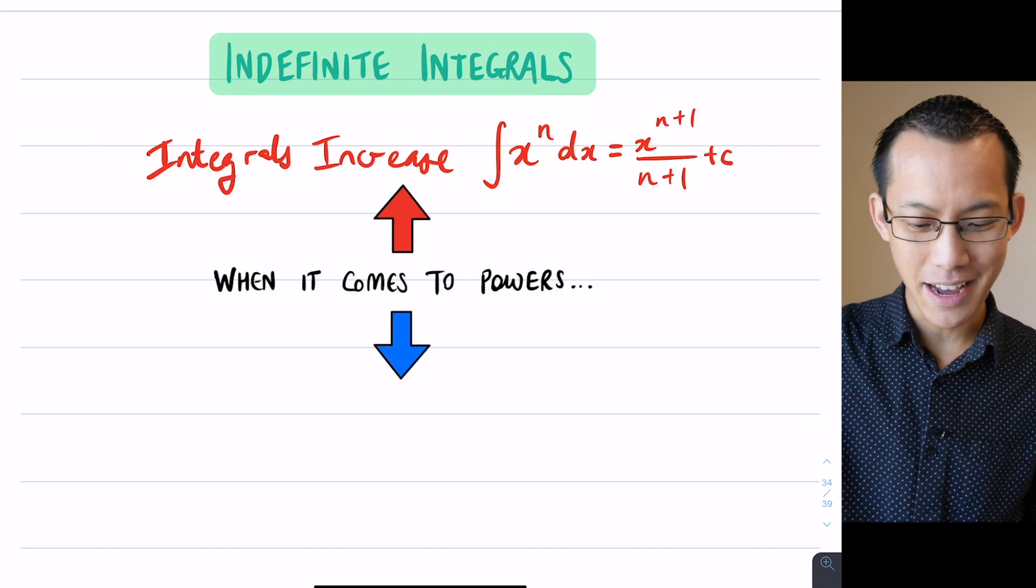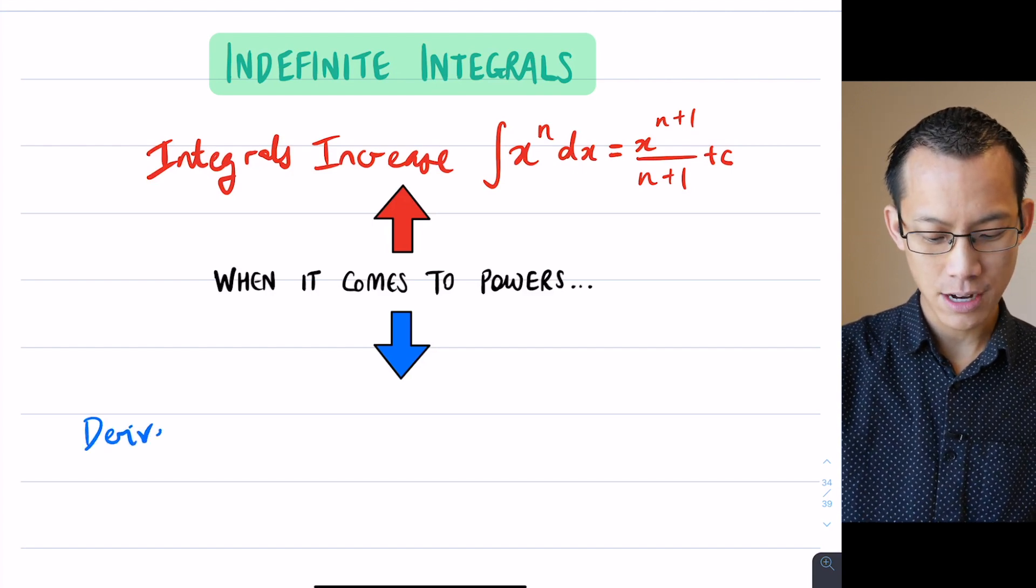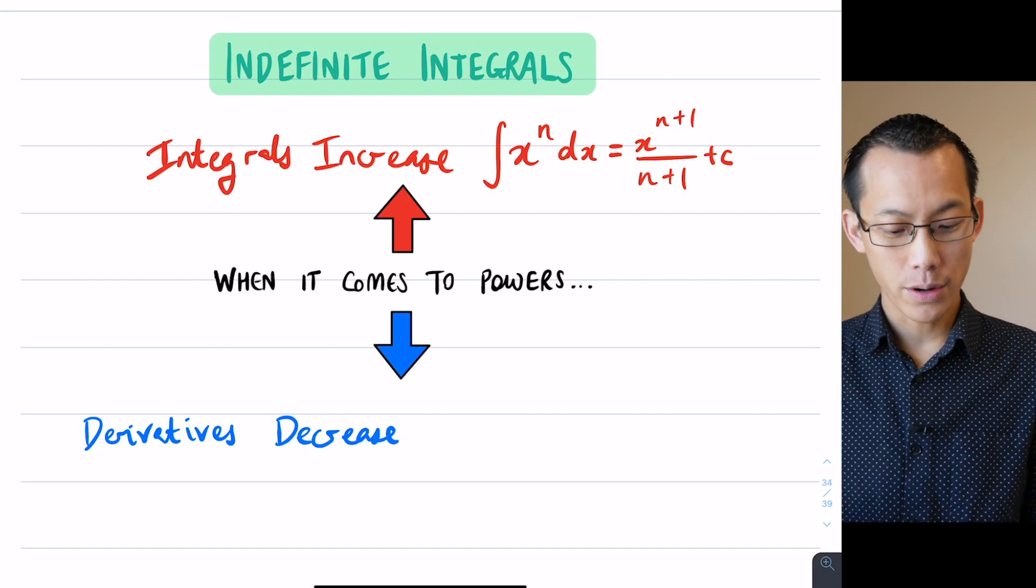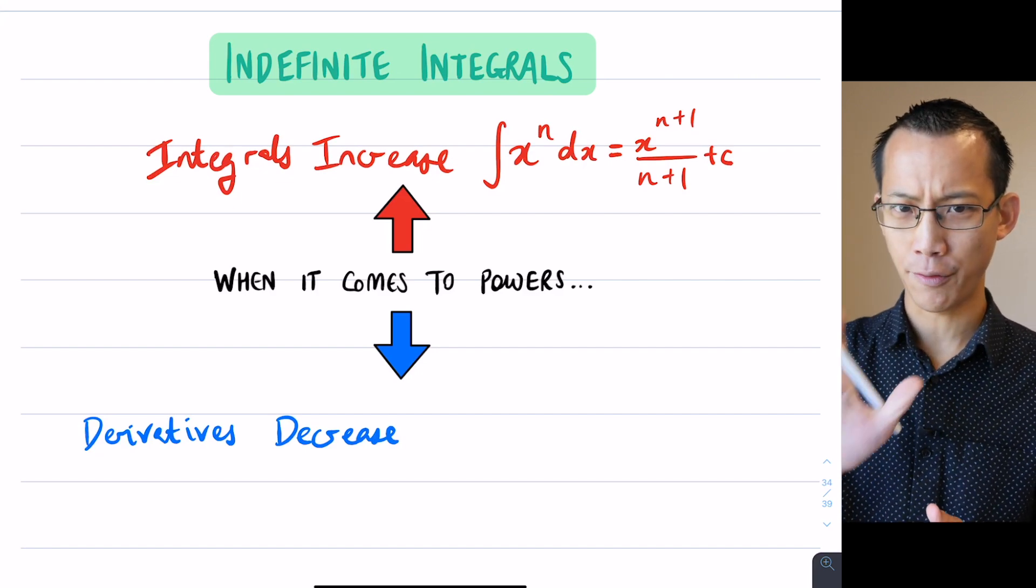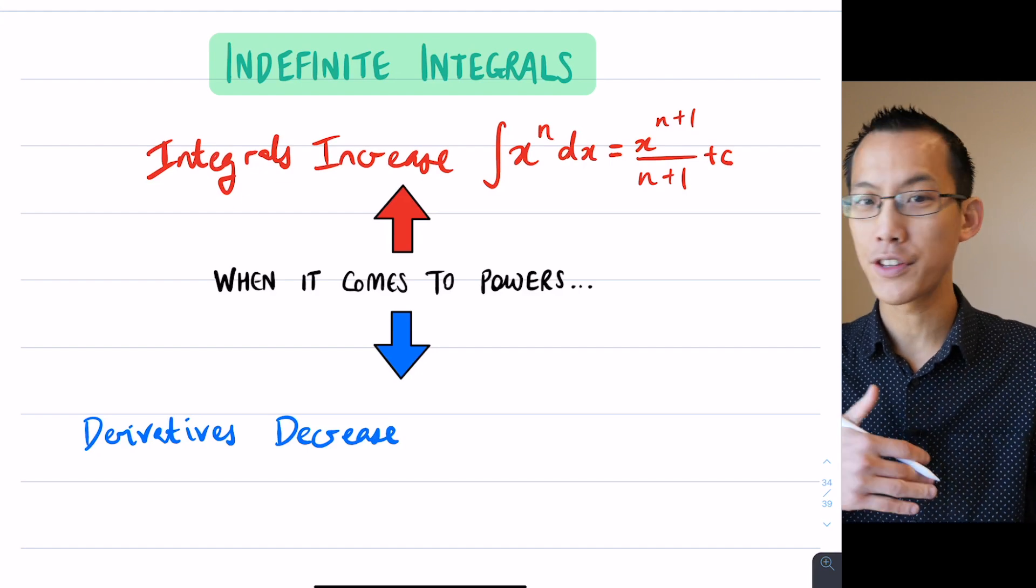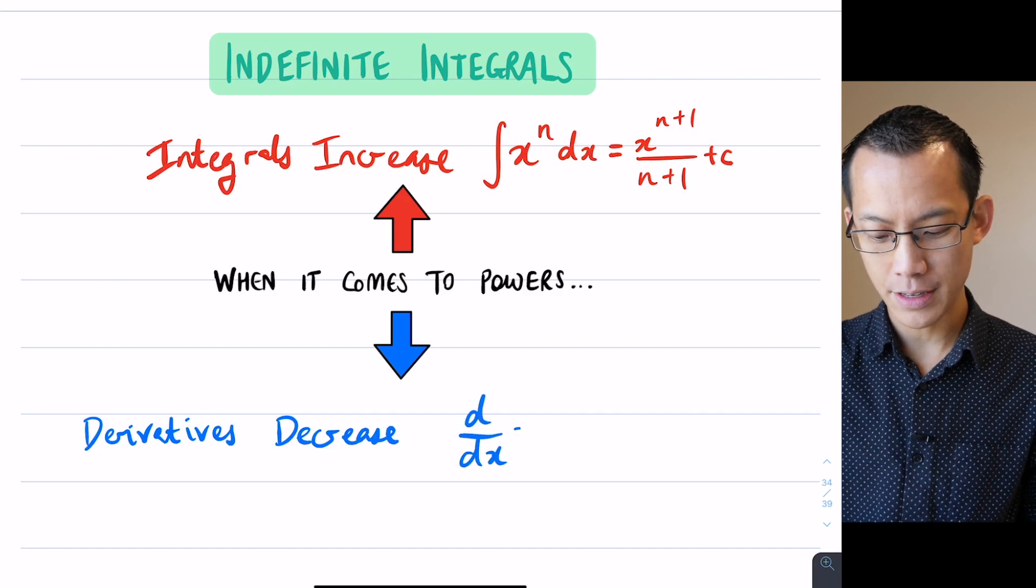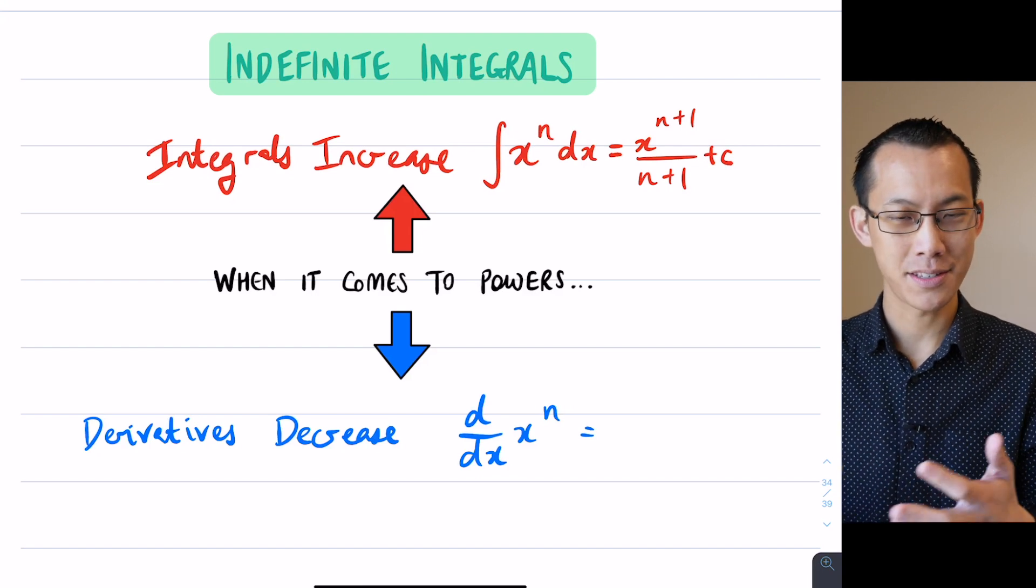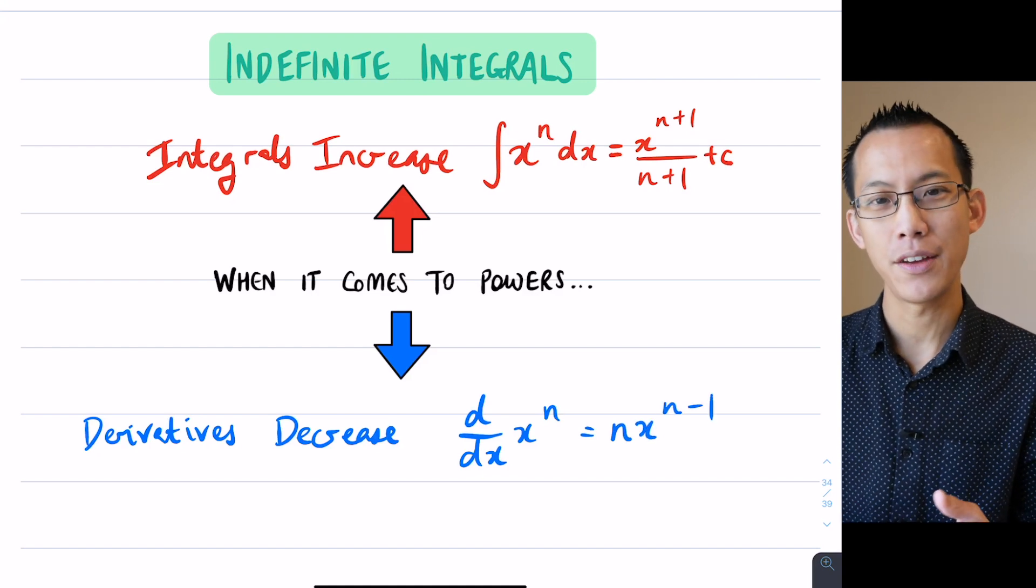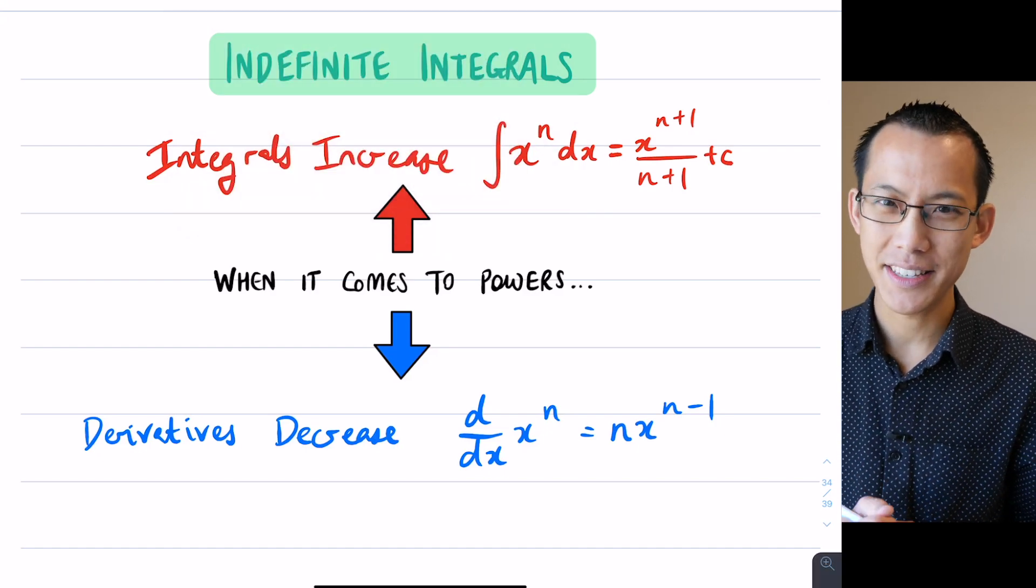So if for example we were integrating something like x to the power of n, whether that n was 1, 2, 3, 4, or 5, or even for negative numbers as we've seen except for negative 1, what do we do there? Well we increase the index. We would write that as x to the power of n plus 1, and then we divide by that new power. Don't forget we're dealing with indefinite integrals here, so you get that constant of integration flying on the end there. Now you're probably anticipating what the other side of the mnemonic is, right? If integrals increase, well conversely derivatives decrease.